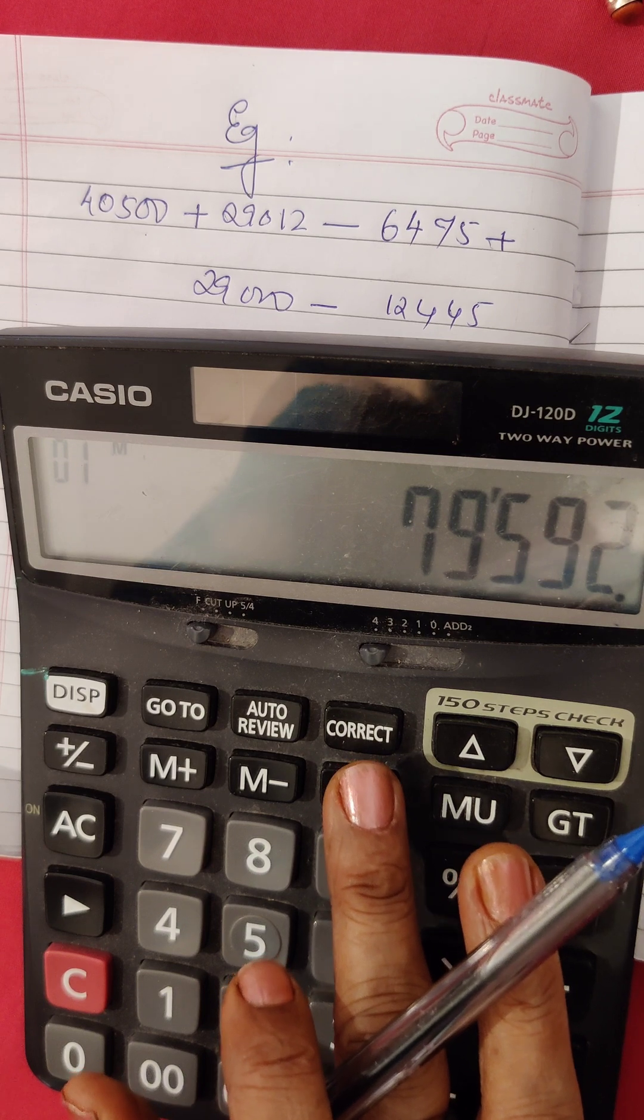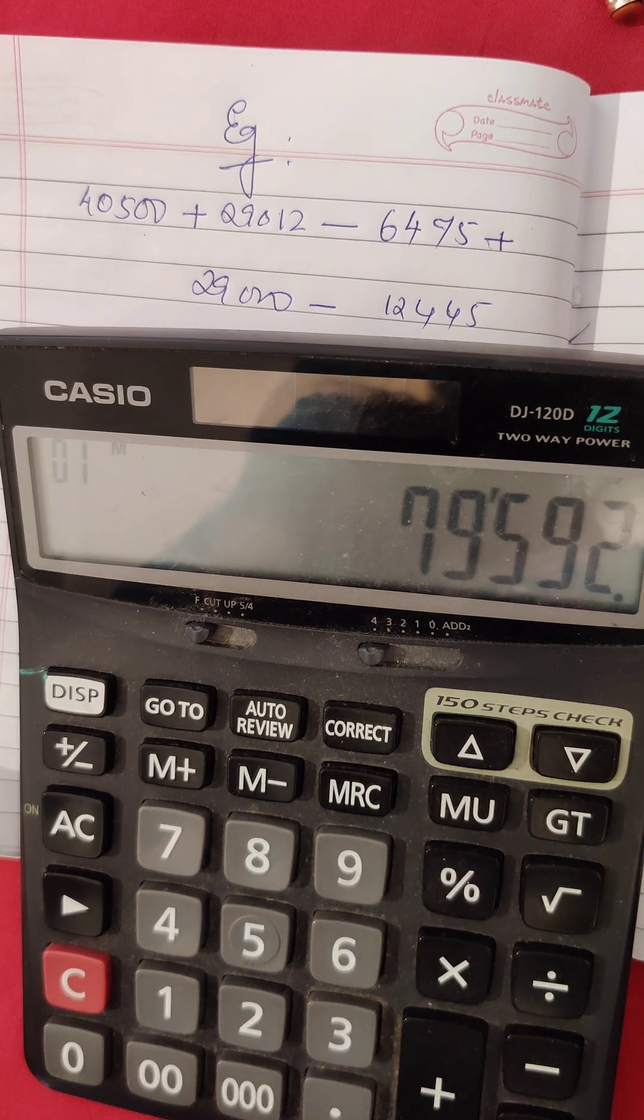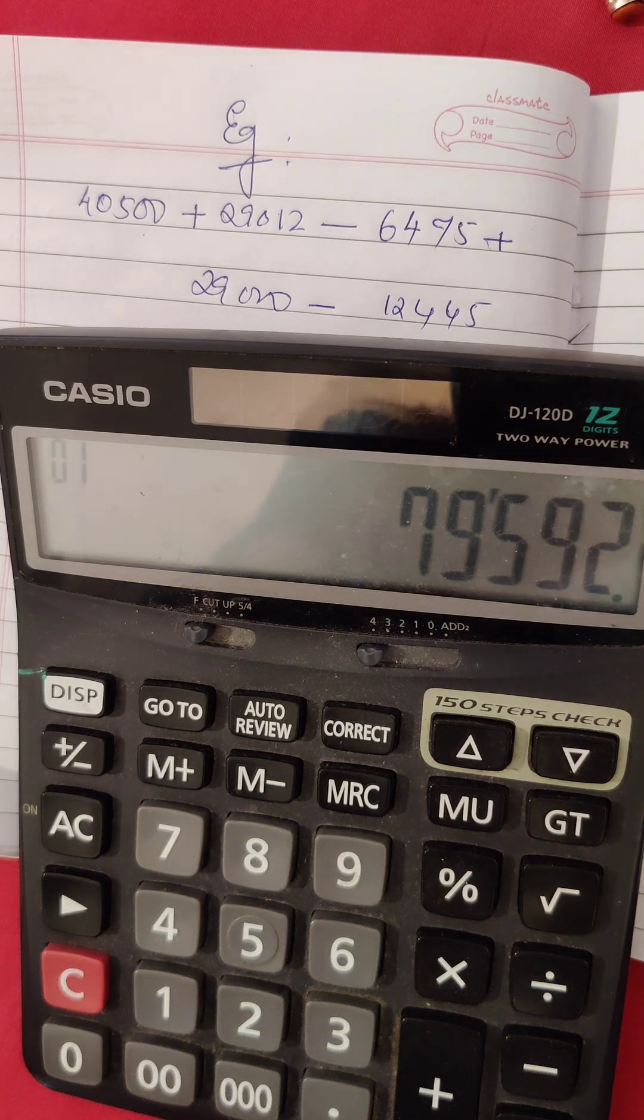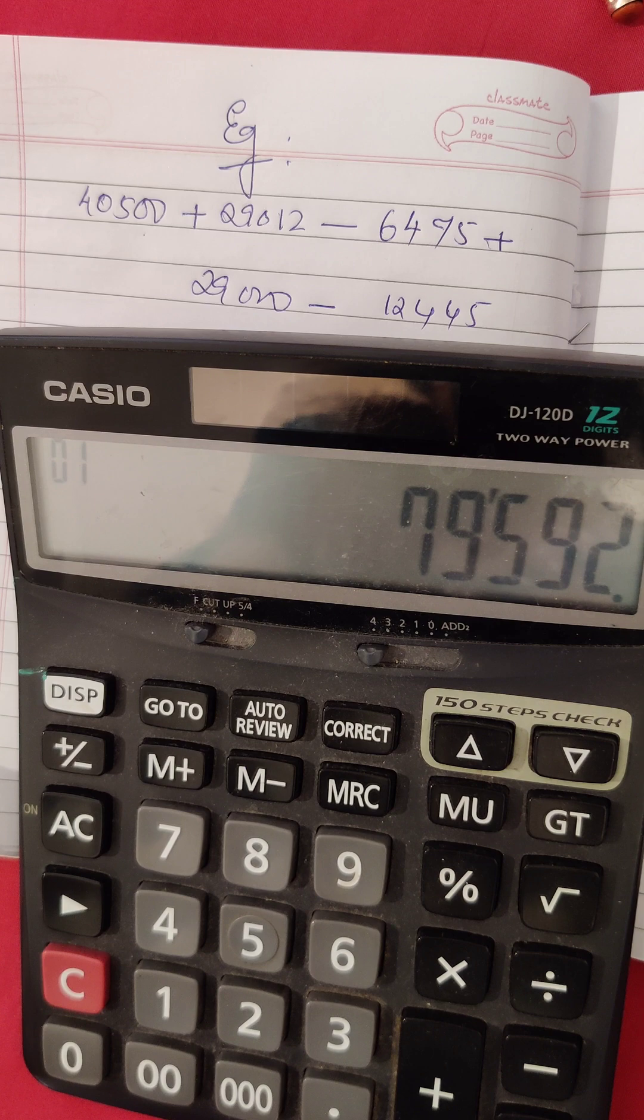Please observe the display. When you clicked it once again, this number has come. Again you click it and that M is gone. That means you have deleted or erased this number from the memory.